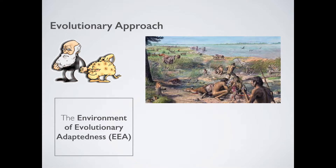The evolutionary approach would argue that much of human behaviour is the output of psychological adaptation evolved to solve problems in our ancestral environment — roughly a quarter of a million years ago in the plains of Africa. The evolutionary approach refers to this as the environment of evolutionary adaptiveness, or the EEA for short. Primitive man faced predators, limited food, unclean water, the constant threat of other tribes. Evolutionary psychologists argue that all human behaviour arose to solve these problems.